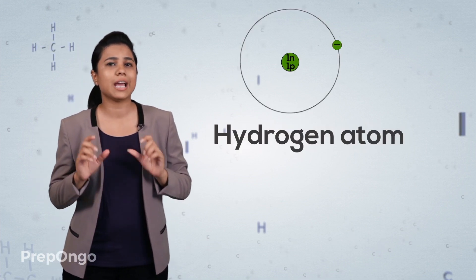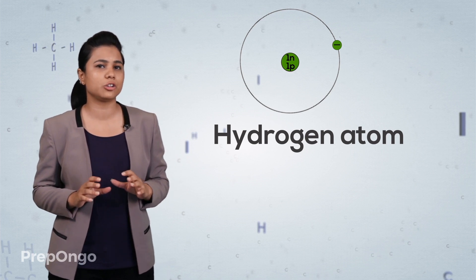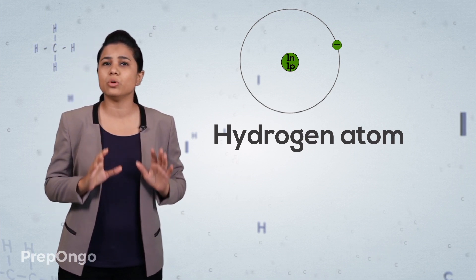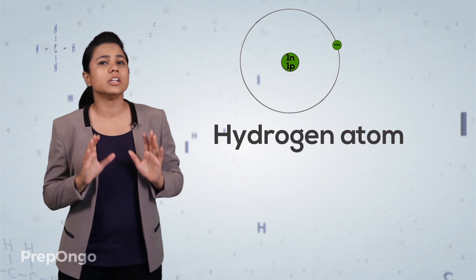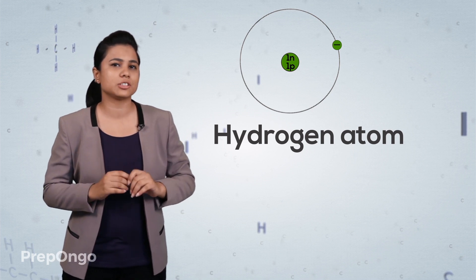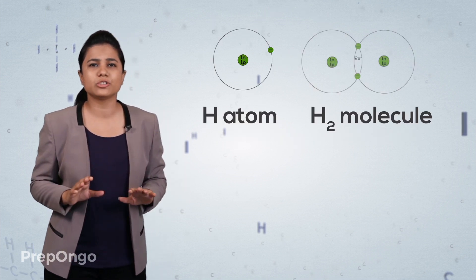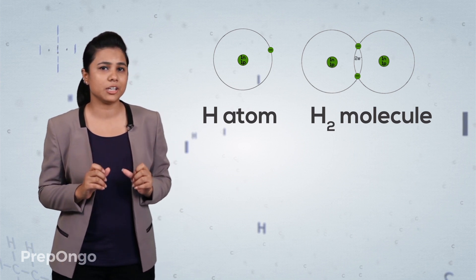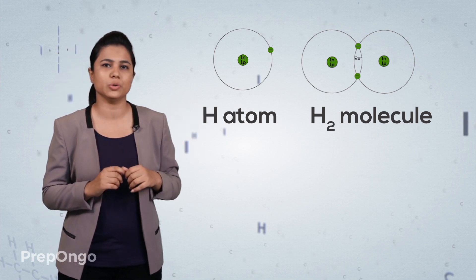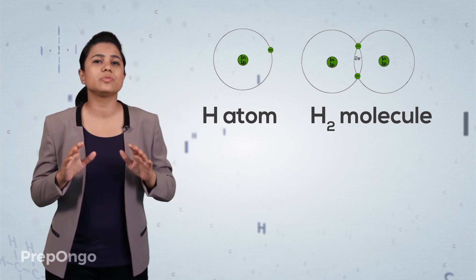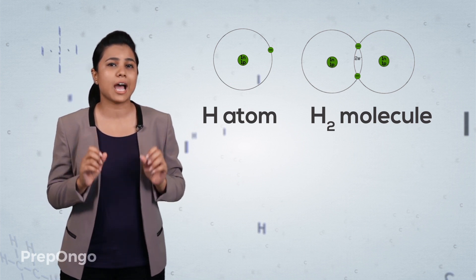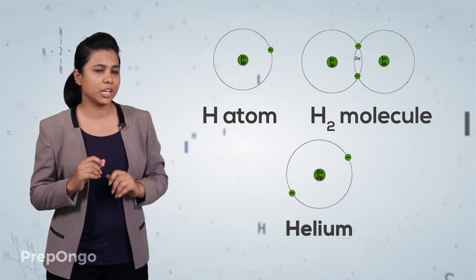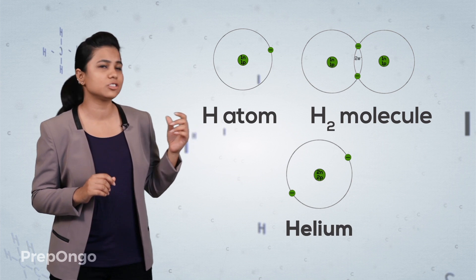We know hydrogen has only one electron in its outermost shell and it needs one more electron to gain the nearest noble gas configuration. So two hydrogen atoms will share their electrons and get balanced to form a hydrogen molecule, allowing them to gain the nearest noble gas configuration, that is of helium.